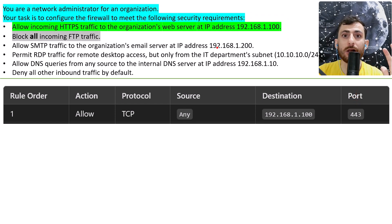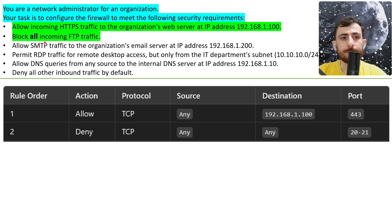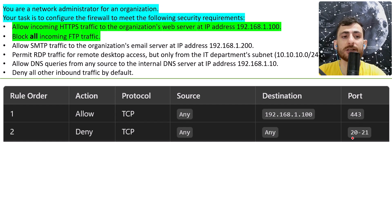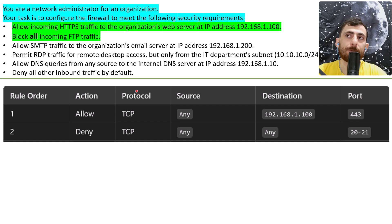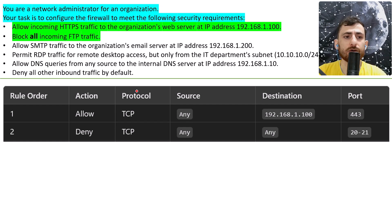How about blocking all incoming FTP traffic? You might need one or two rules for this one. To block, we use the action deny. Protocol is TCP, source is any, and destination is any — because we want to block all traffic from any source to any destination. The ports are going to be 20 and 21. For FTP, there are two key ports dealing with server-to-client data transfer and command control.